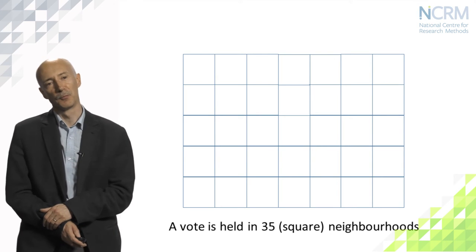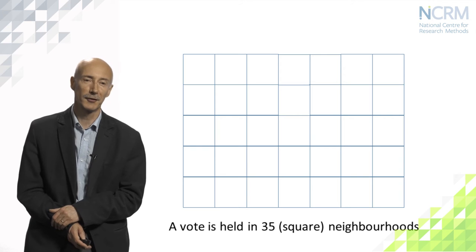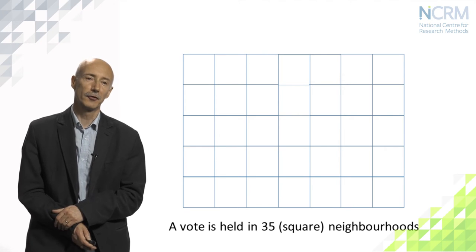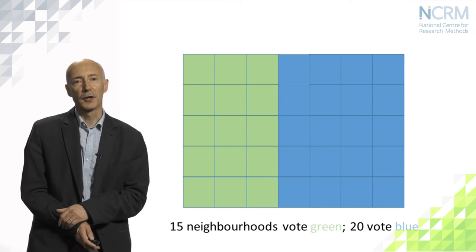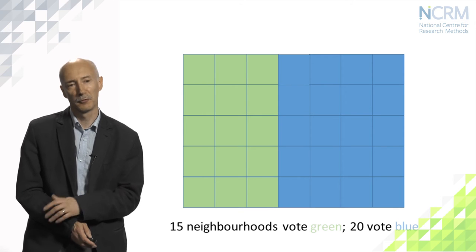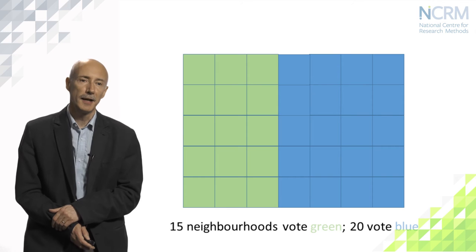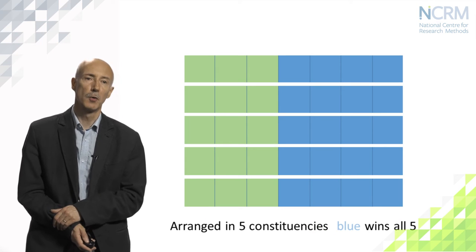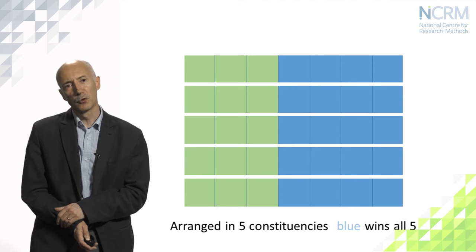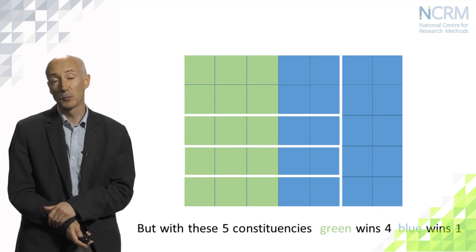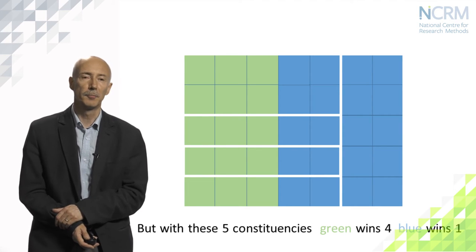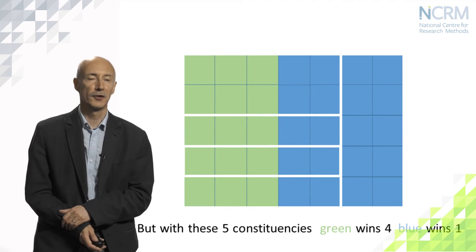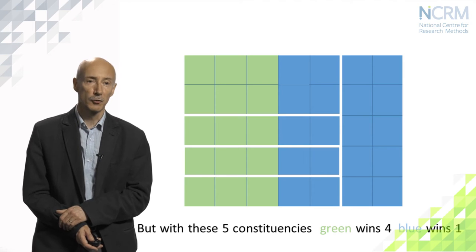In my toy town example, votes are to be held in 35 neighbourhoods — square neighbourhoods of equal sizes — and the result of the vote was that 15 neighbourhoods vote green and 20 vote blue. If we organise those neighbourhoods into five constituencies, in one particular configuration blue wins all five because blue is in the majority in all five constituencies. But if we were to redraw the boundaries of five constituencies in a different configuration, we almost reverse the result because green wins four and blue only wins one. That's the result of having concentrated blue's core area into a single zone such that in the other four zones, green is in the majority.